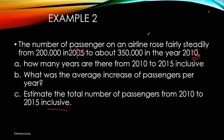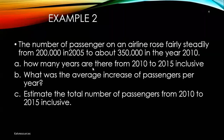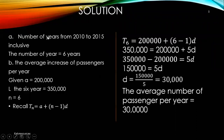Let's go to the solution. For part (a), the number of years from 2010 to 2015 inclusive is six years. From 2010 to 2015 that is five years, but since 2015 is included, we add one, giving us six years.